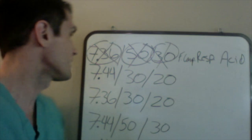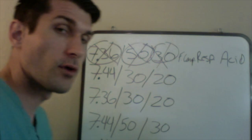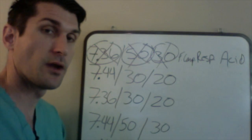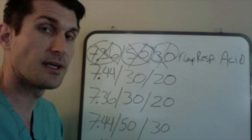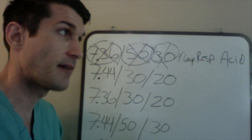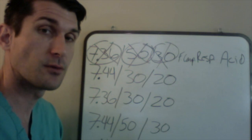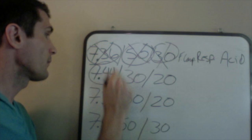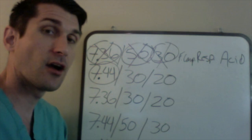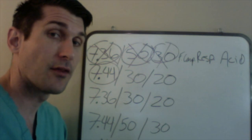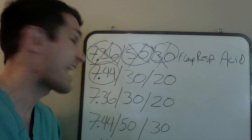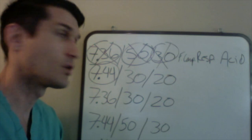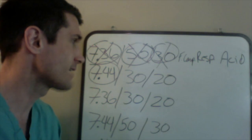Our next blood gas has a pH of 7.44. Now 7.44 is within normal range, because 7.35 to 7.45 is the normal range for pH. However, it's erring towards one side — and that side is alkalosis. It's erring towards the basic side.